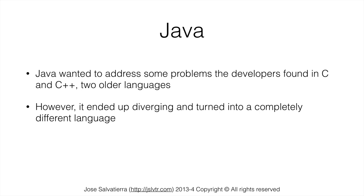C and C++ were compiled languages, so they're used for more heavyweight applications. Java is used more for commercial applications where being cross-platform — being able to run on Windows, Linux, or Mac — is more important than running really quickly.